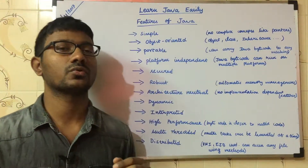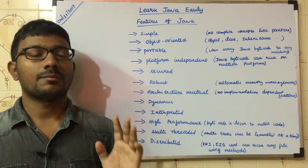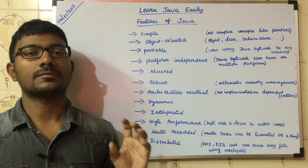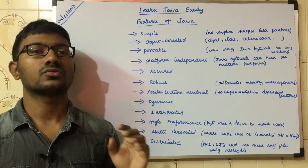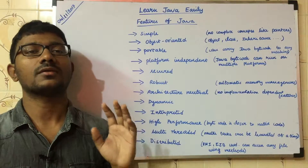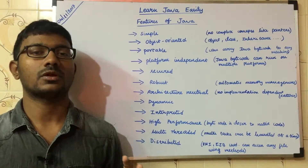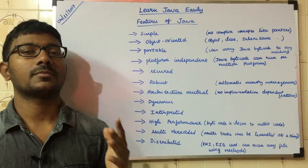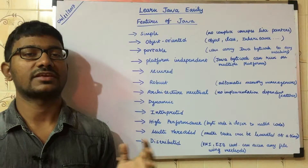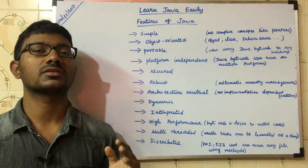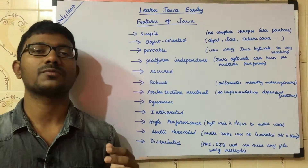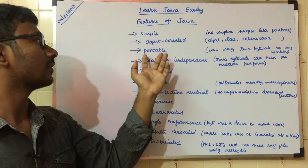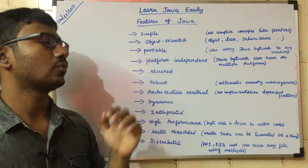The next feature is object-oriented. There are some conditions that need to be satisfied to treat a programming language as object-oriented, like inheritance, polymorphism, abstraction, and so on. We will talk more about these in the upcoming videos in detail.